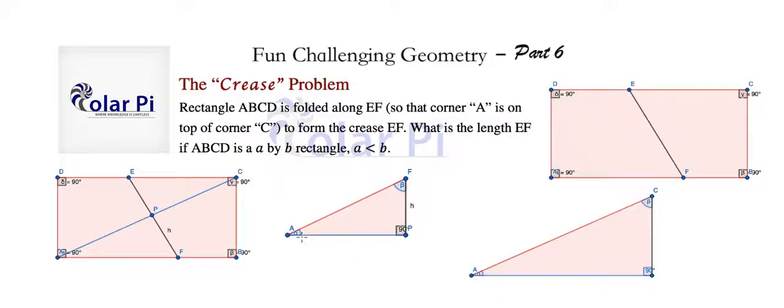They both also have a 90-degree angle. Therefore, by the angle-angle theorem, these two triangles must be similar. And if they're similar, then the ratio of their corresponding sides have to be equal.